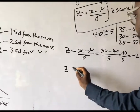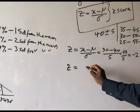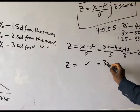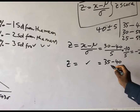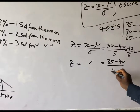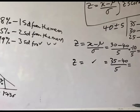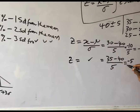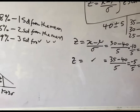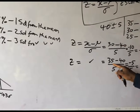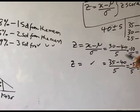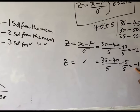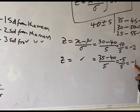The next one: z equals 35 minus 40 divided by 5 equals minus 5 divided by 5 equals minus 1. So a student scoring 35 is lying within one standard deviation from the mean.